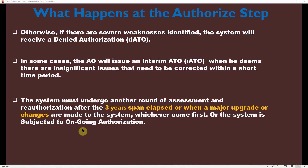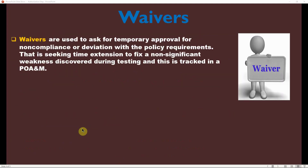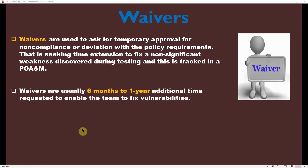The system must undergo another round of assessment and reauthorization after the three-year span has elapsed, or when a major upgrade or change is made to the system — whichever comes first — or the system is subjected to ongoing authorization. Waivers are used to ask for temporary approval for non-compliance or deviation from policy requirements, seeking a time extension to fix a non-significant weakness discovered during testing. This is tracked in a Plan of Action and Milestones.